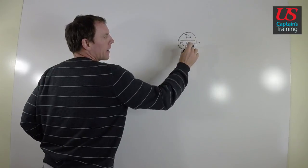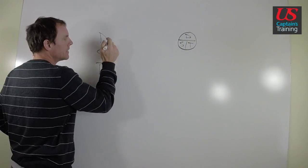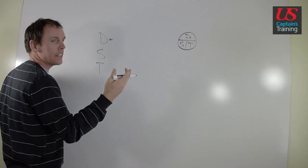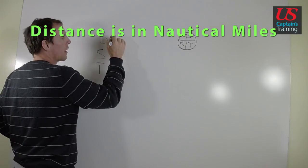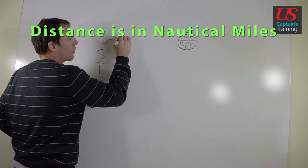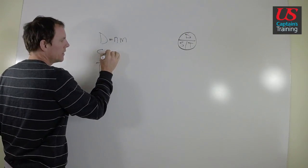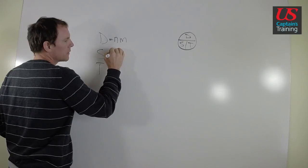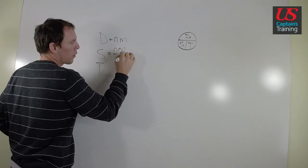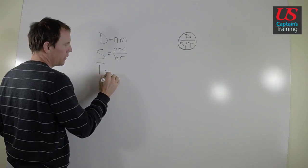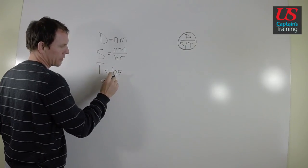Distance is always in nautical miles. So distances are always going to be in nautical miles for our chart navigation. Speed is always going to be in nautical miles per hour. And time will always be in hours, just hours.